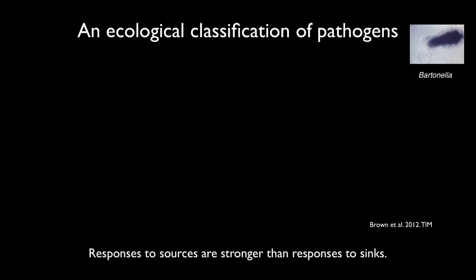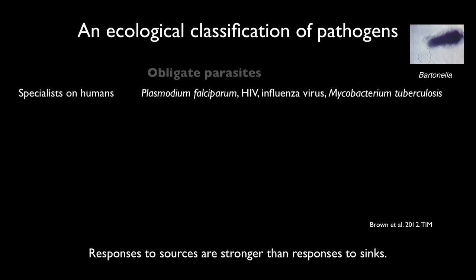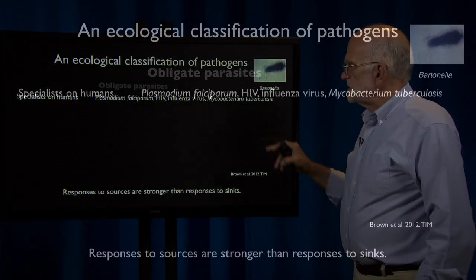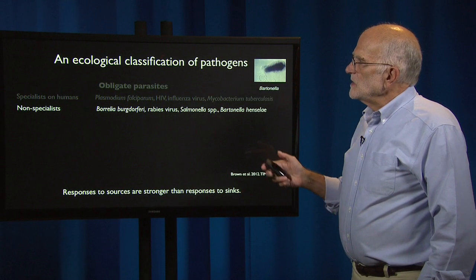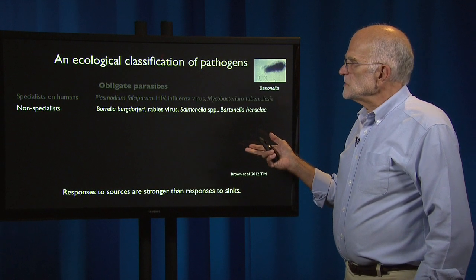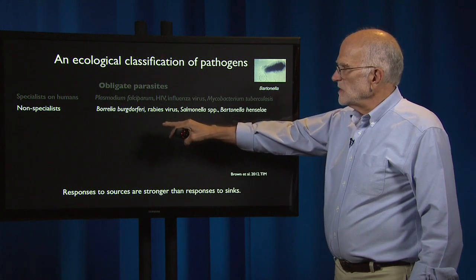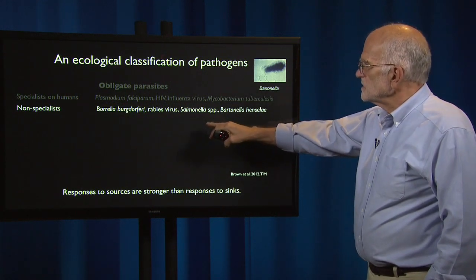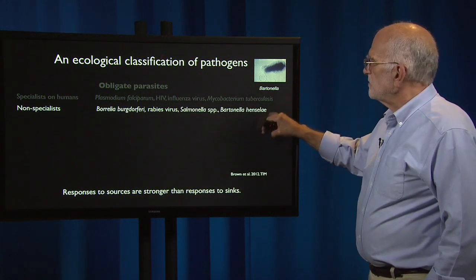Let's look at an ecological way of classifying pathogens. Some are obligate parasites and specialists on humans — for example, Plasmodium falciparum, HIV, flu, and TB. There are non-specialists such as Lyme disease, Borrelia burgdorferi, the rabies virus, Salmonella, and Bartonella.